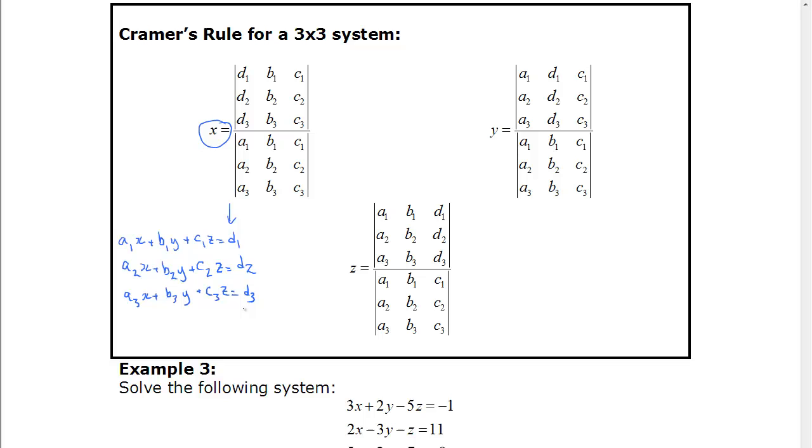So if we want to find y, we're going to replace the y column instead of the y coefficient and we put the constant, and similarly for z. So just like we saw for 2 by 2, just bigger determinants to solve now.